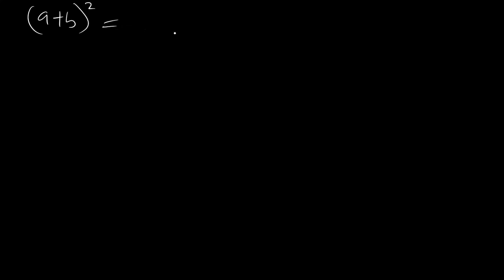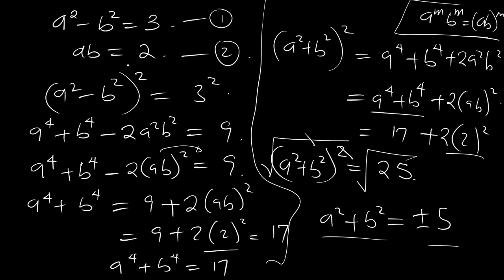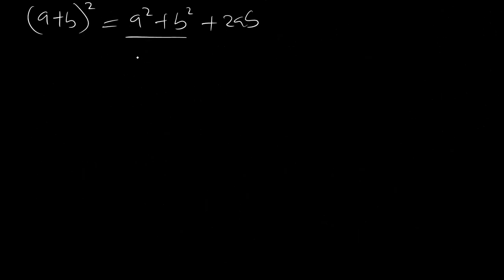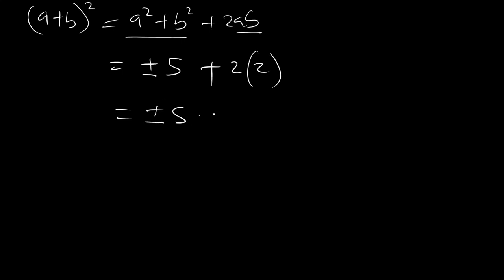Now we square a plus b. If you square a plus b, you have a squared plus b squared plus 2ab. We have gotten a squared plus b squared to be plus or minus 5, and 2 times ab equals 2 times 2 from equation 2, giving plus or minus 5 plus 4.